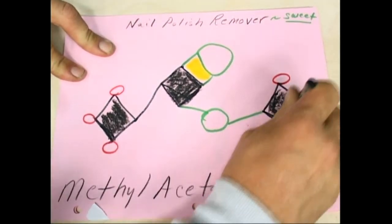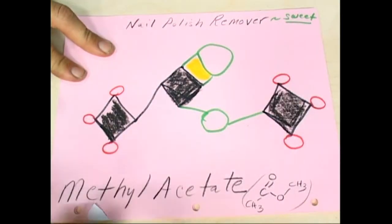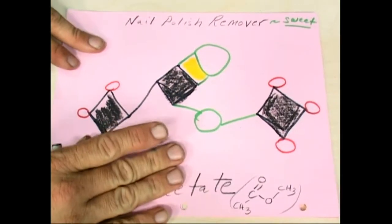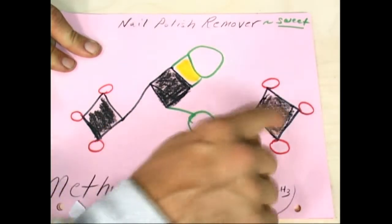Nail polish remover. Methyl acetate. Acetate's usually going to be two carbons.